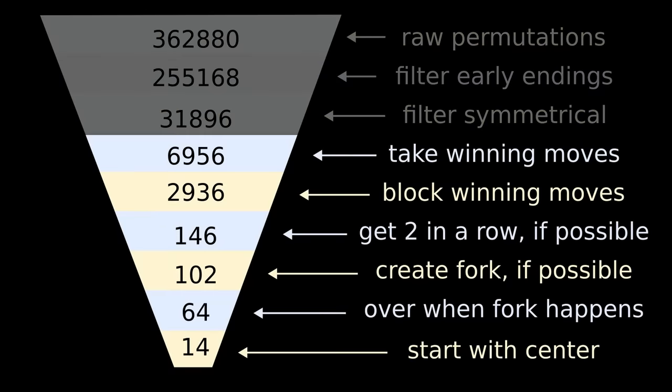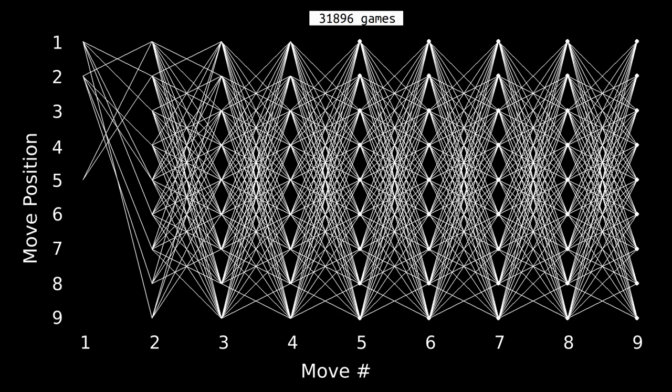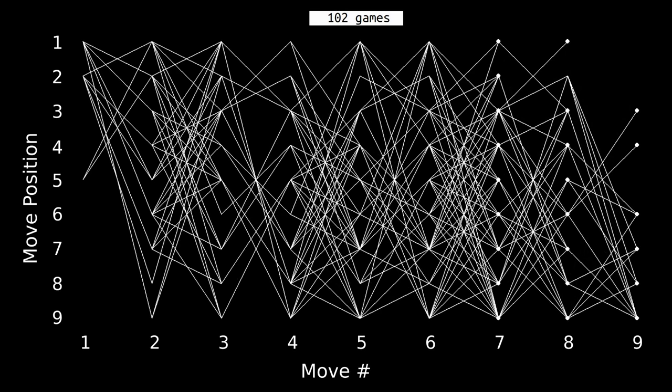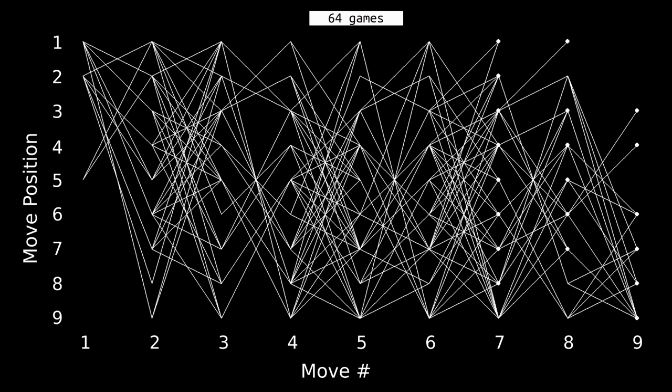But from here on, I started filtering based on strategy. The first step was to assume that players take winning moves when they appear. Next, we assume that players block the winning moves of the other player. Then we assume that players try to get two in a row if they can, that they take the opportunity to fork if it presents itself, and then we get it down to 64 games by considering a game to be over the moment a fork takes place.